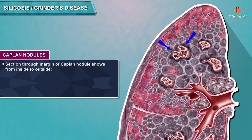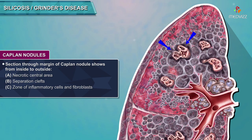Sectioned through the margin of Caplan nodules, from inside to outside, one finds: a necrotic central area, separation clefts, a zone of inflammatory cells and fibroblasts, and an outer rim of collagen.